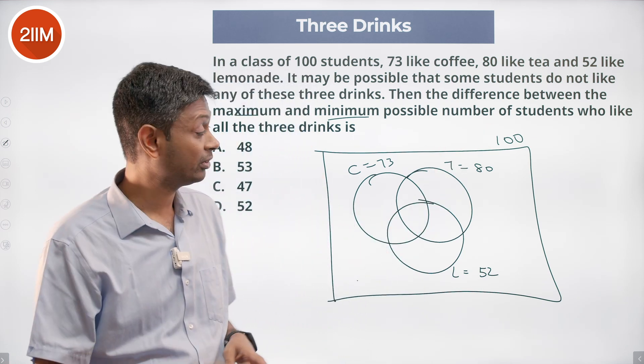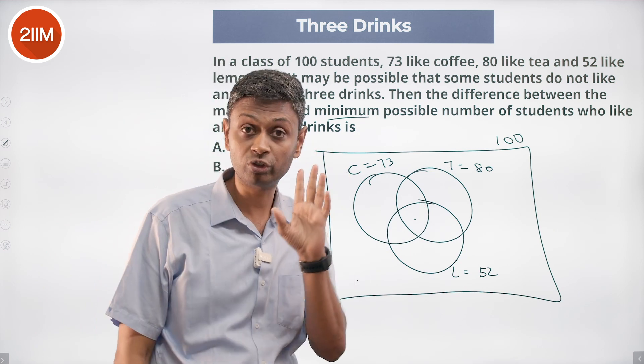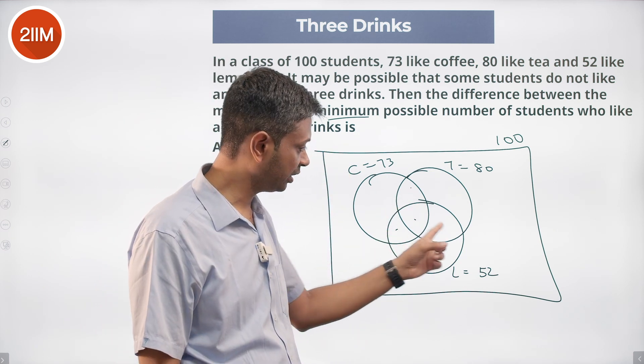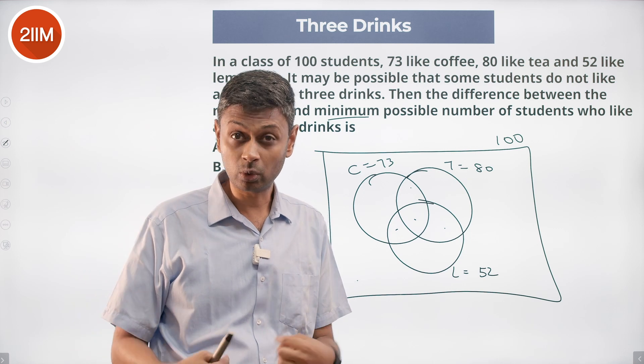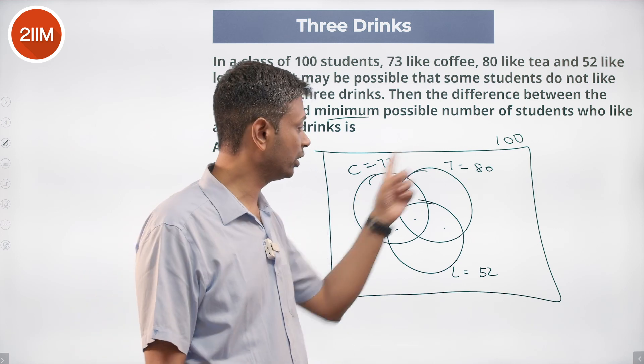That straightaway says there's got to be somebody sitting here. This cannot go to zero because if you put the numbers here, here and here, each number will get double counted. Even after double counting it won't hit this 205, right?